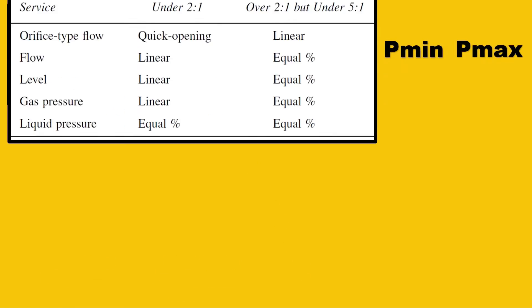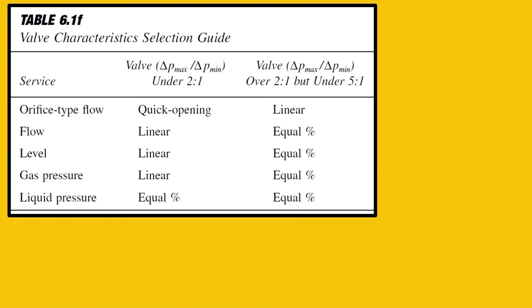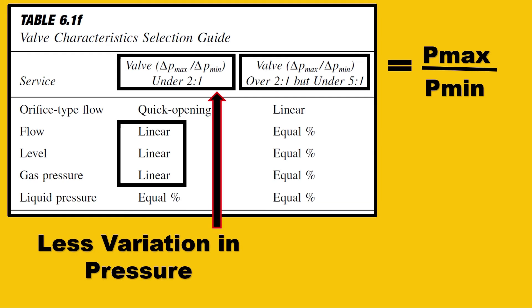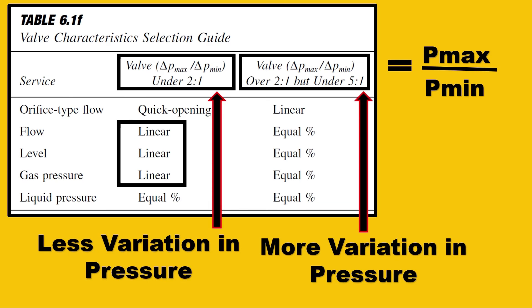The basic concept is: if the pressure variation (Pmax/Pmin) is less, you have less deviation from the characteristics, so you can go for linear characteristics. But if the pressure variation is more, you should go for a characteristic that can balance it. Usually, you go for equal percentage, with the final balanced value being linear characteristics.